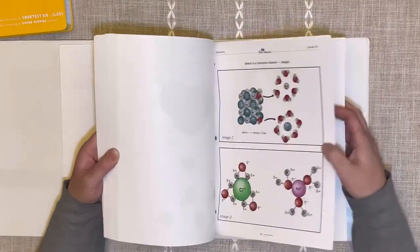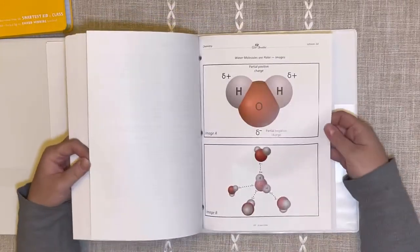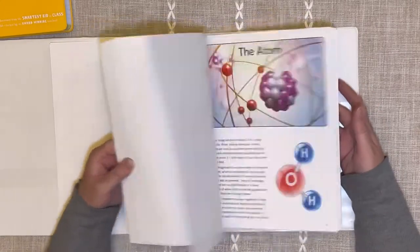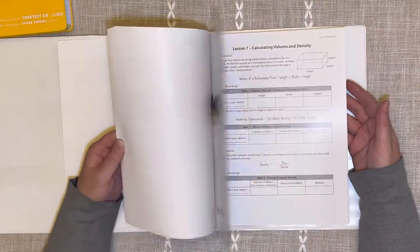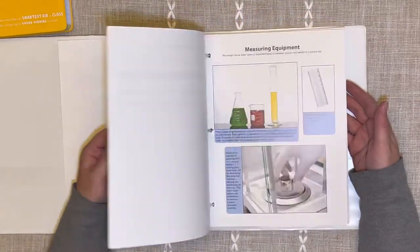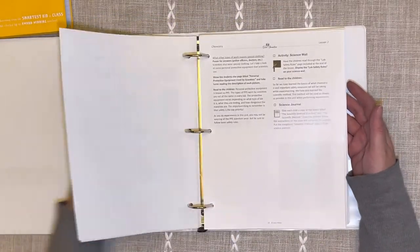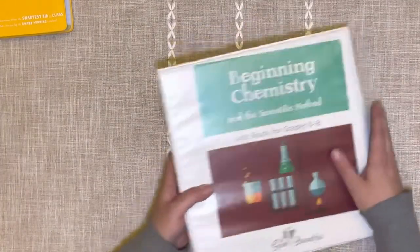So all of their things are kind of set up that same way. This one happens to have a mini book. They don't all have a mini book. I'm going to just flip through so that you can see some of the other pages. There is a lot in here. Like I said, this is technically for grades five to eight.